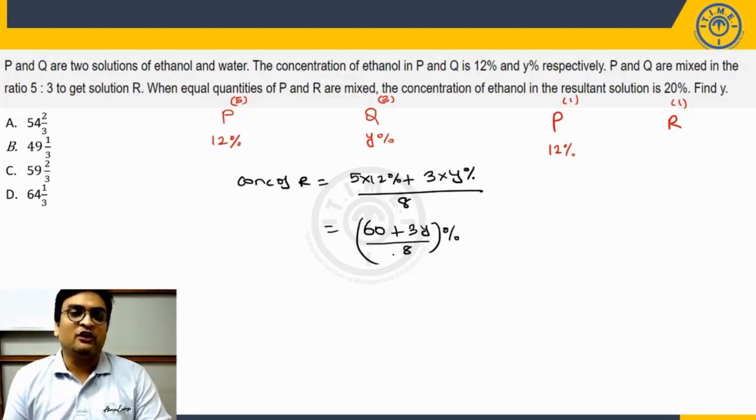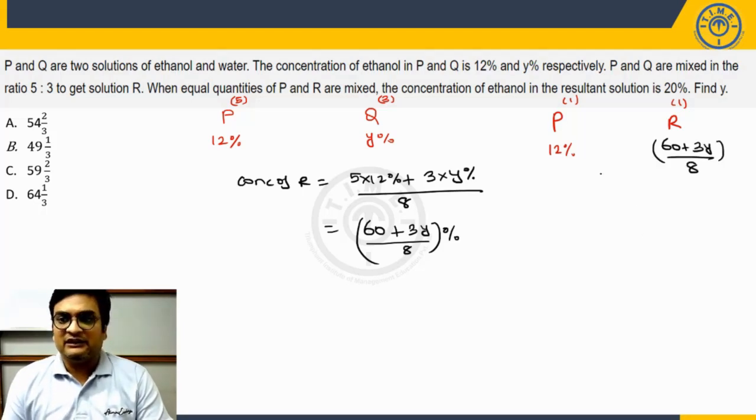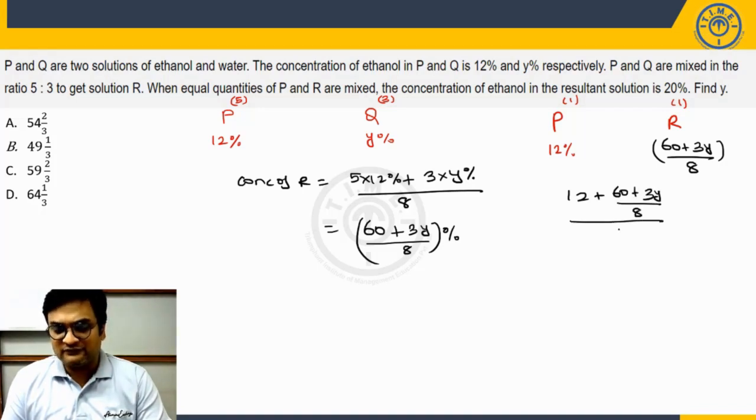This is the concentration of ethanol in the solution R. And now he says P and R are mixed with equal quantities. R concentration is how much? (60+3Y)/8 percentage. P is given to be 12%. Now, when you mix them, you are getting the resultant as 20%. Thus can I say simple average of these two, (60+3Y)/8 upon 2, simple average of these two should be equal to 20%. Percentage on both sides can be cancelled out.